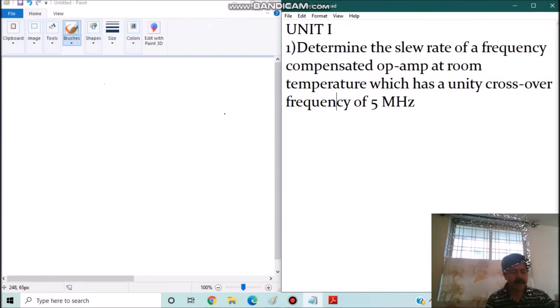Hello students, let us solve some numericals on our first unit like calculations on CMRR and slew rate. Let's take the first example which says determine the slew rate of a frequency compensated op-amp at room temperature which has a unity crossover frequency of 5 megahertz.